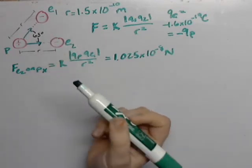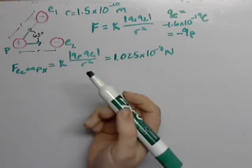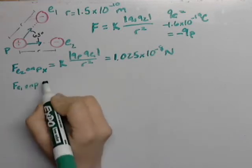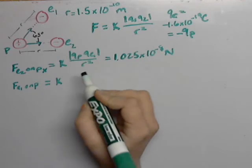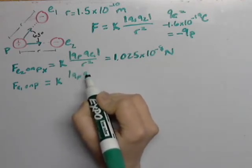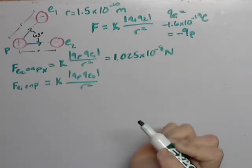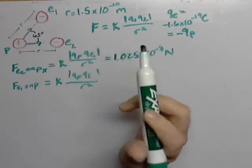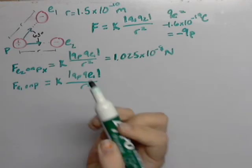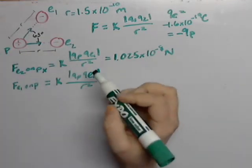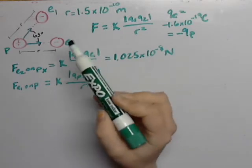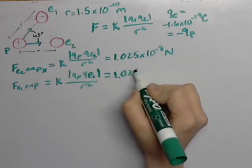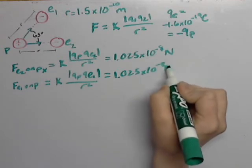This one we're going to have to break up into components. First of all, let's find what the force of E1 on P is equal to. That's going to be K times QP Q of E2 over R squared. Again, both E1 and P are going to have the same charge as well as the same charge as E2. Therefore, this is also going to equal 1.025 times 10 to the negative 8 newtons.